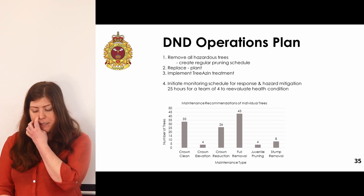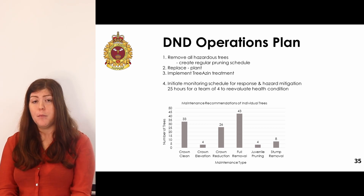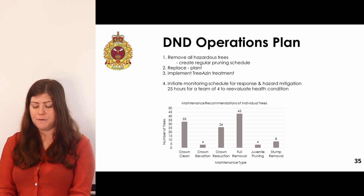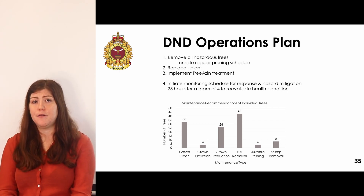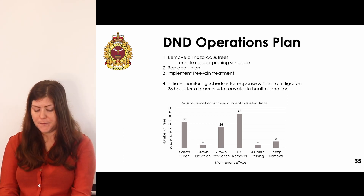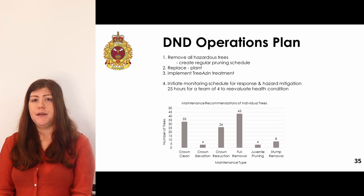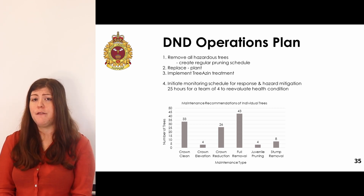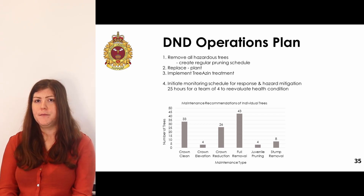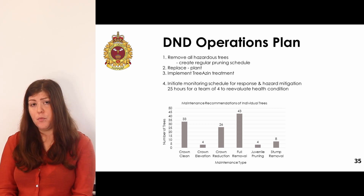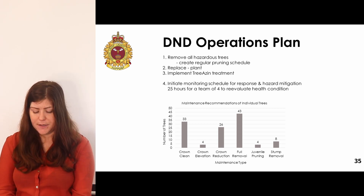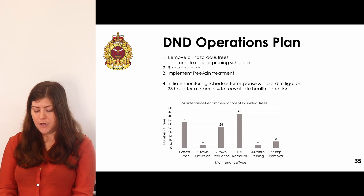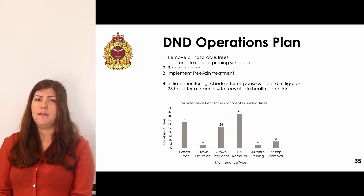Our operations plan is based on the recommended Scenario 3 to maximize ecosystem services, beginning in 2022. The aim of the first five years is to complete recommended maintenance while optimizing future conditions for ecosystem service values. This involves removing all hazardous and dead trees, creating a regular pruning and maintenance schedule, replacing all removed trees with planting, and implementing a TreeAzin treatment for emerald ash borer due to the high quantity of ash within DND. We also recommend initiating a monitoring schedule, re-evaluating the inventory approximately every five years at an estimated cost of $4,000.